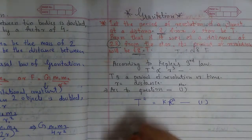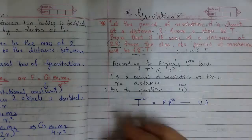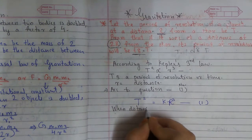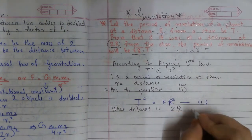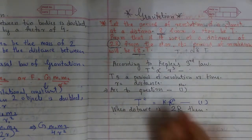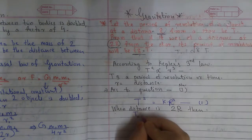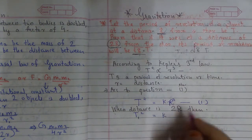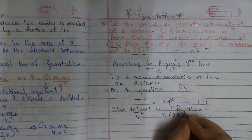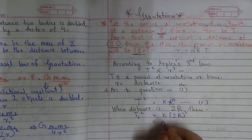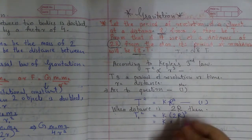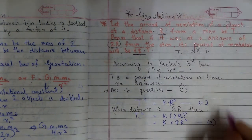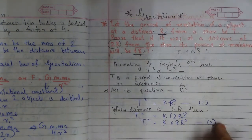According to statement 2, when the distance is doubled — that means twice R — the equation becomes T₁² = k(2R)³. Expanding the cube of 2 gives 8, so T₁² = 8kR³. This is our Equation 2.